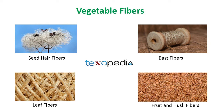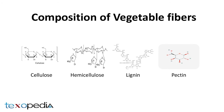Some fibers are obtained from leaf like sisal, pineapple and banana. And some fibers are obtained from fruit like coconut and bottleneck. All these fibers are made from the composition of cellulose, hemicellulose, lignin and pectins. Now we will discuss each in detail one by one.